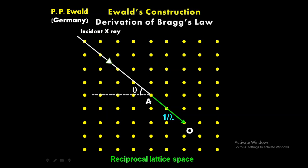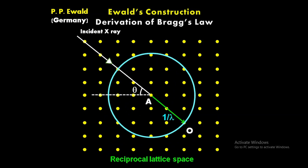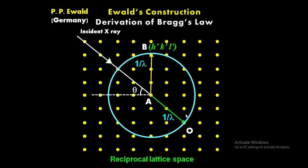If we consider the vector length AO = 1/λ as a radius and draw a circle — in three dimensions this is called the Ewald sphere — this circle touches a reciprocal lattice point B, which has coordinates (h', k', l'). So AB is also a radius of this circle, and therefore the length of AB is also 1/λ. On the circumference we have two reciprocal lattice points: the reference origin O and the reciprocal lattice point B.